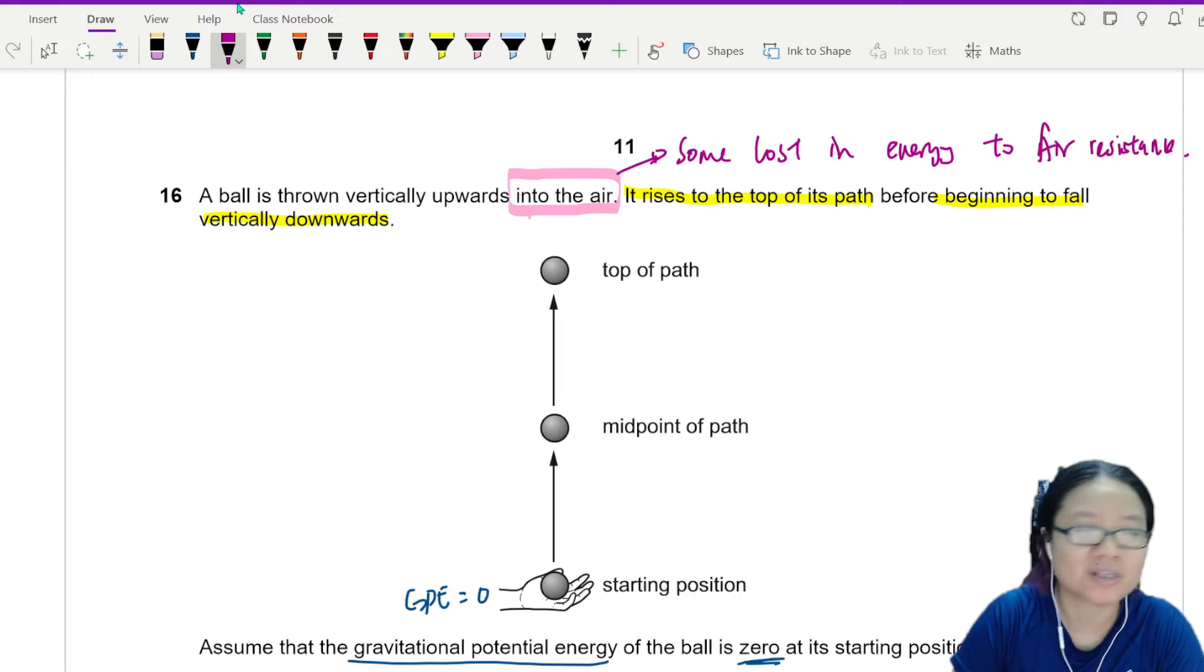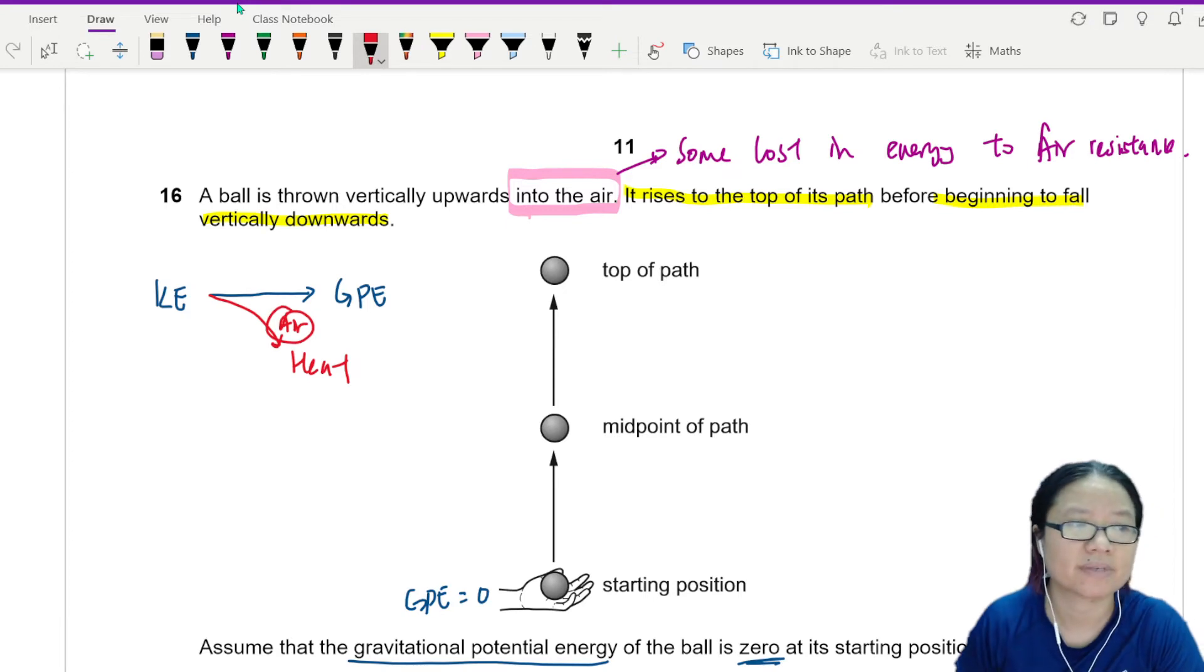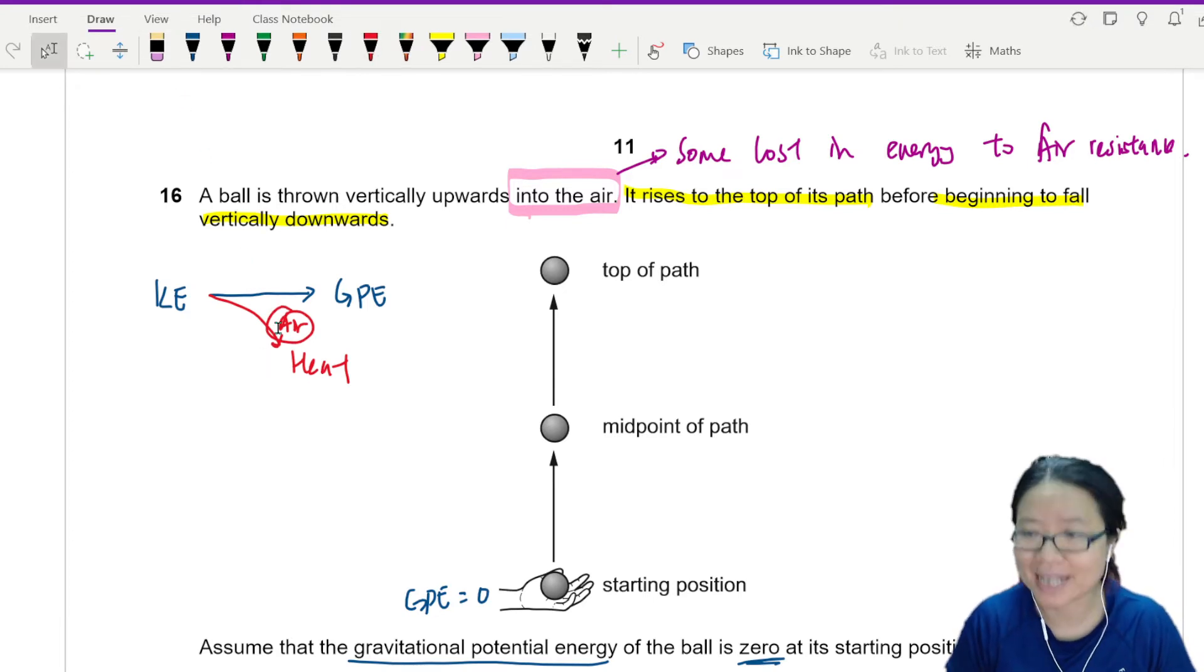If you want to draw the Sankey diagram or the energy flow diagram, you will have kinetic energy. Some of it becomes GPE, but some of it is lost as heat thanks to air resistance. It do be like that sometimes.